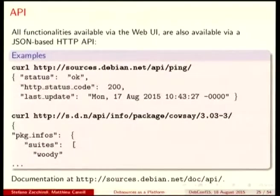Last thing before passing the mic to Matteo: everything I've discussed is available via user interface in your web browser, built on top of HTML and JSON. But all the information we expose on the user interface is also exposed to developers via an API. There is a JSON-based API which you can use to extract any kind of information from sources and use it programmatically. For instance, if you're interested in statistics like how many lines of C code are part of Chromium, you can use an API to extract that information.